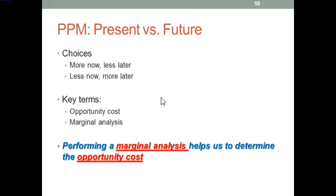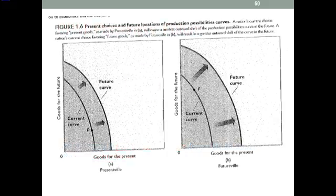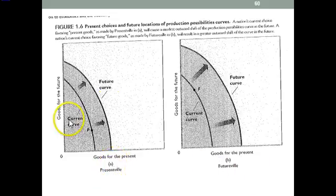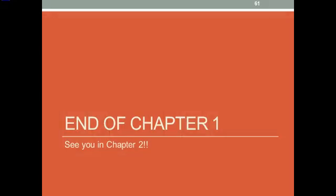Performing a marginal analysis helps us determine the opportunity cost of the decisions that we make. This is an example of PresentVille and FutureVille — take a look and see if you can figure out what these graphs are saying. Feel free to pause and think about it, and we'll discuss this more in class. That is the end of Chapter 1. I will see y'all in Chapter 2. Have a good night.